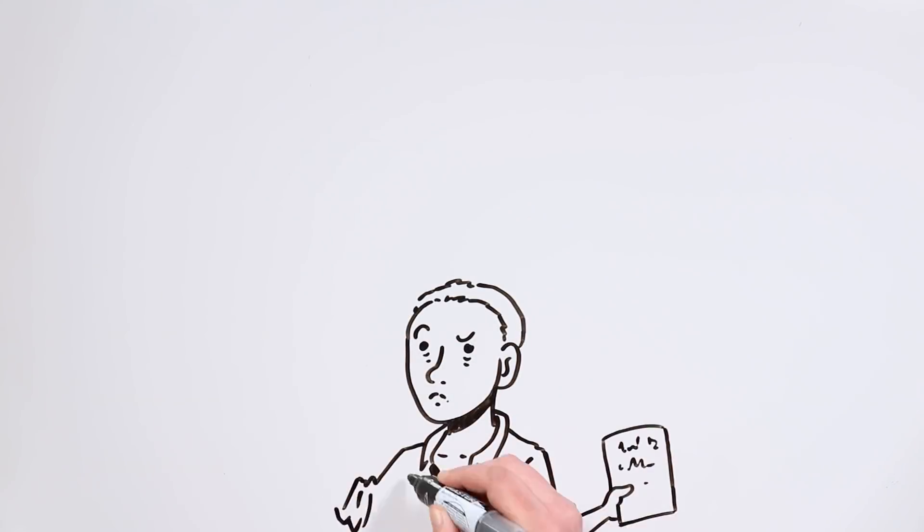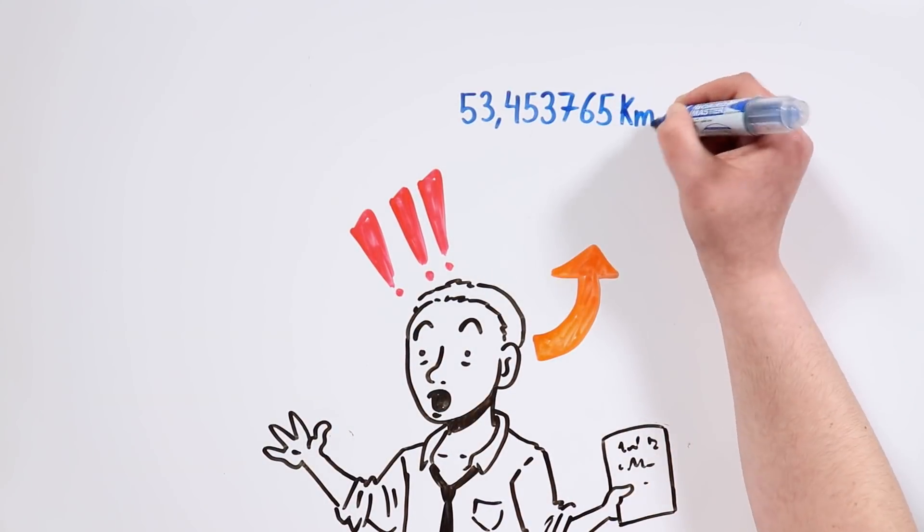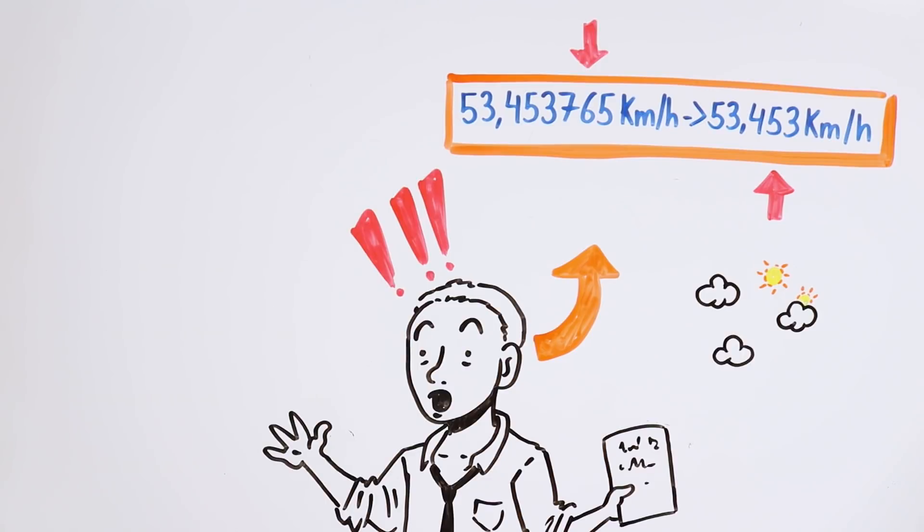After frantically checking numbers and equations, he realized that the cause of the deviation was something as ridiculously simple as using three less decimals than in the first simulation. That insignificant rounding produced a huge variation in his meteorological results, both in the medium and long term.